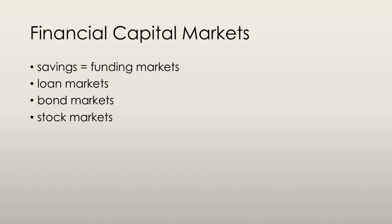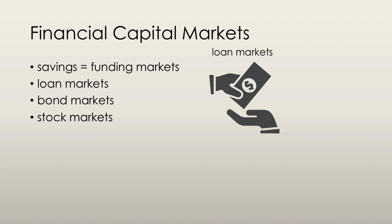Savings is the source of funds in the financial capital markets. In the loan markets, households and firms often borrow money to finance more expensive goods. In particular, a mortgage is a legal contract that gives the ownership of a home to the lender — in most cases a bank — in the event that the borrower fails to meet the agreed-upon loan payments, including repayment of the principal amount and the interest.